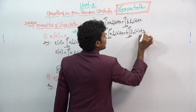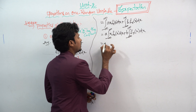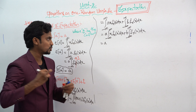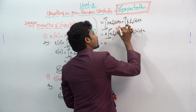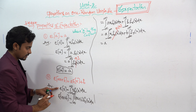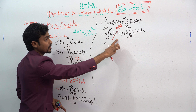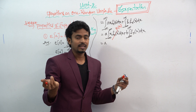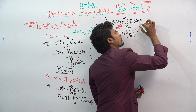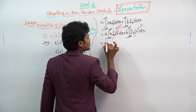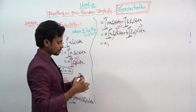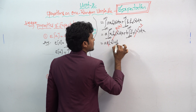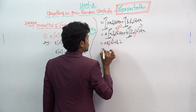Taking constant a outside gives a times the integral from minus infinity to infinity of x times f(x) dx, and taking constant b outside gives b times the integral from minus infinity to infinity of f(x) dx. You already know that a times the integral of x·f(x) dx is the expectation of x. This formula and that expression are the same, so we replace it with E(x).